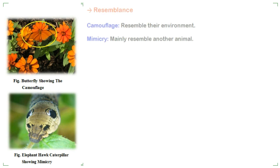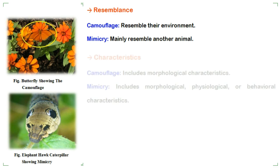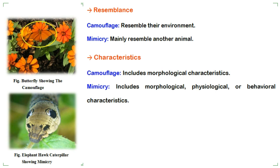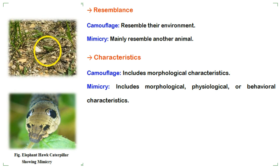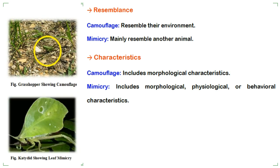The next difference is resemblance: camouflage resembles the environment, while mimicry mainly resembles other animals. Regarding characteristics, camouflage includes only morphological characteristics, while mimicry includes morphological, physiological, or behavioral characteristics.